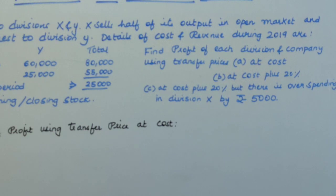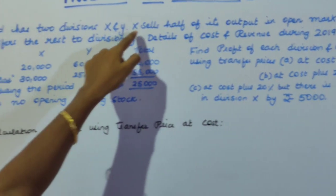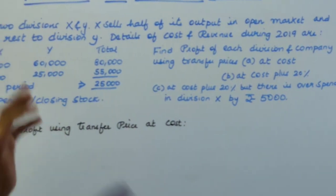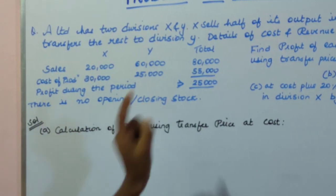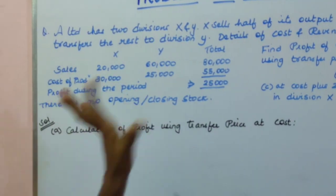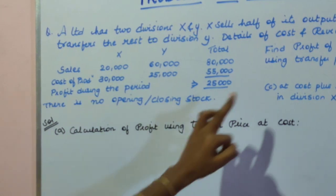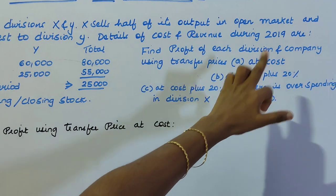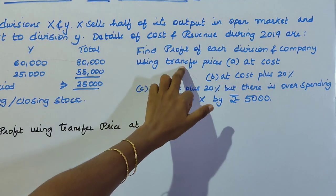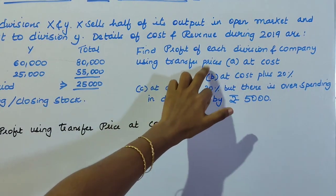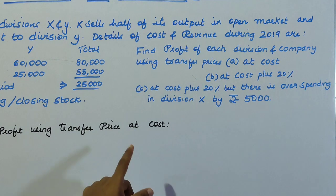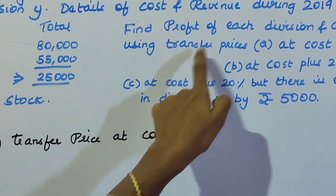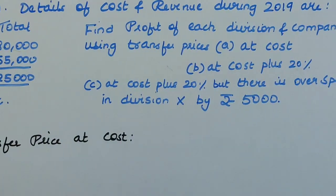Remember the important point from the question: X is selling half in the open market and the rest it is transferring to division Y. Now let us find out the profit of each division and the company using transfer price at cost. Transfer price at cost means transfer is done on the basis of cost of production.